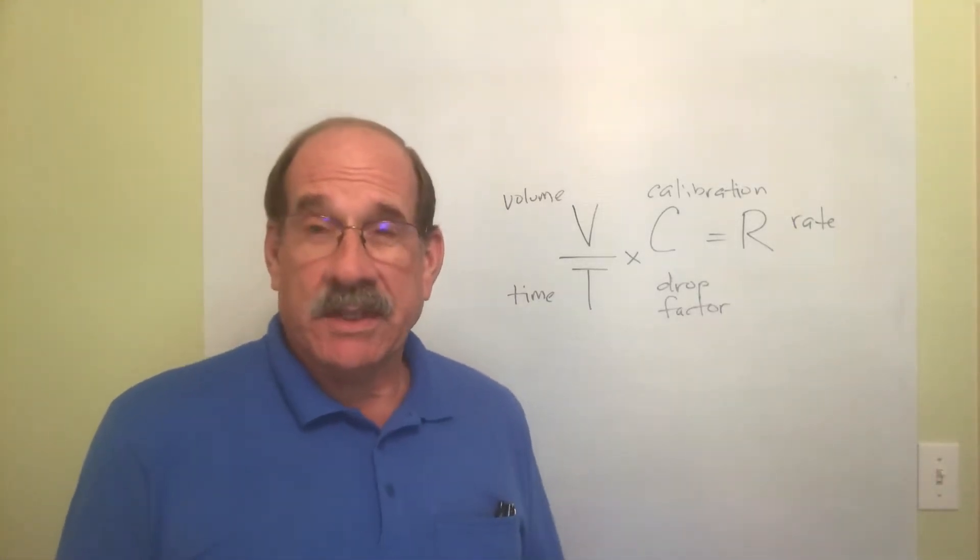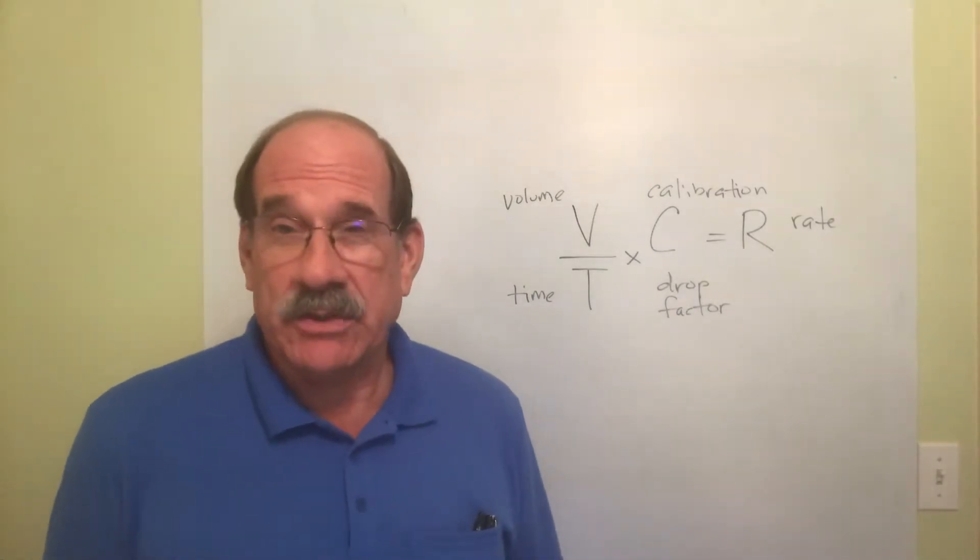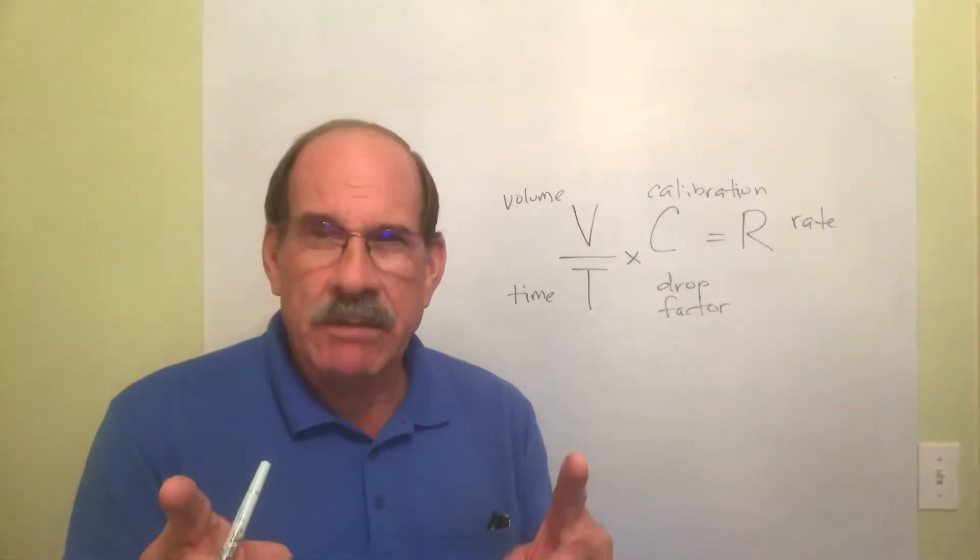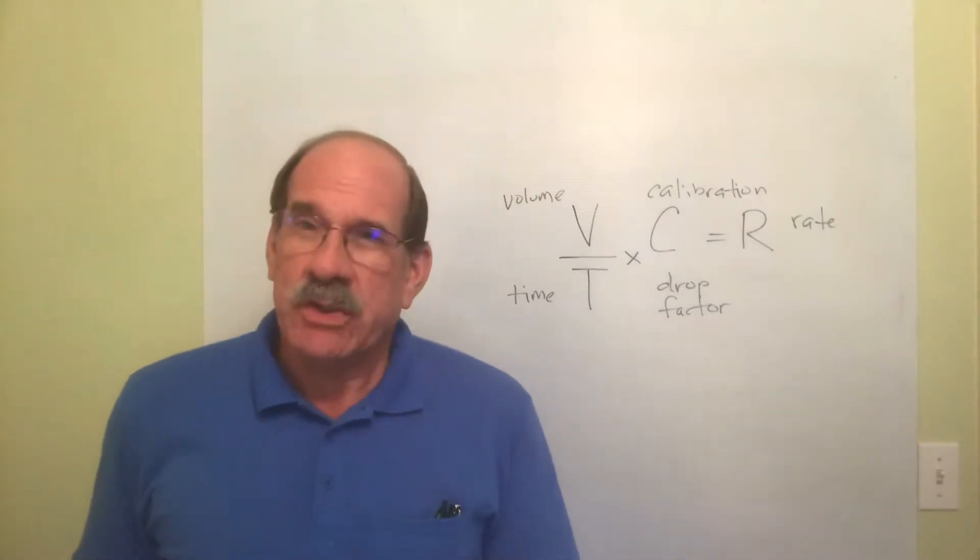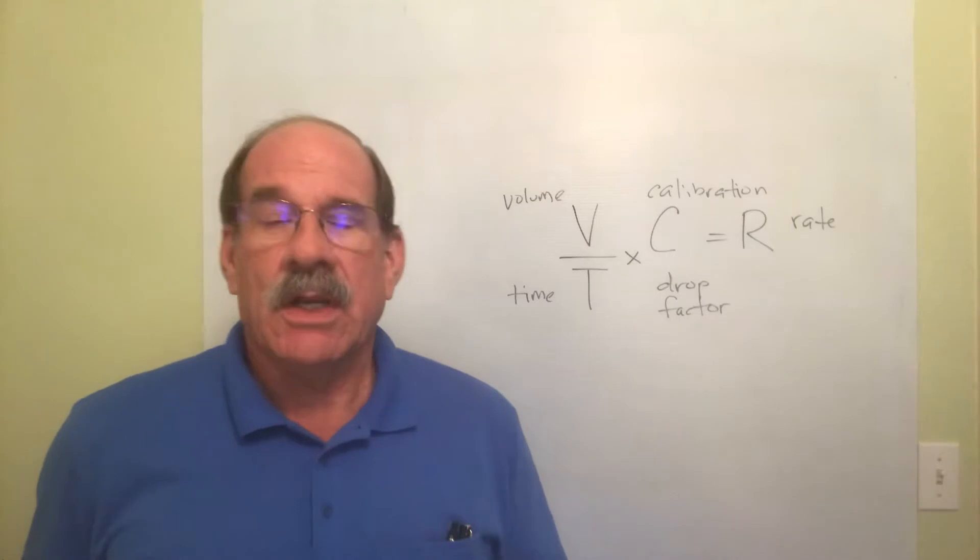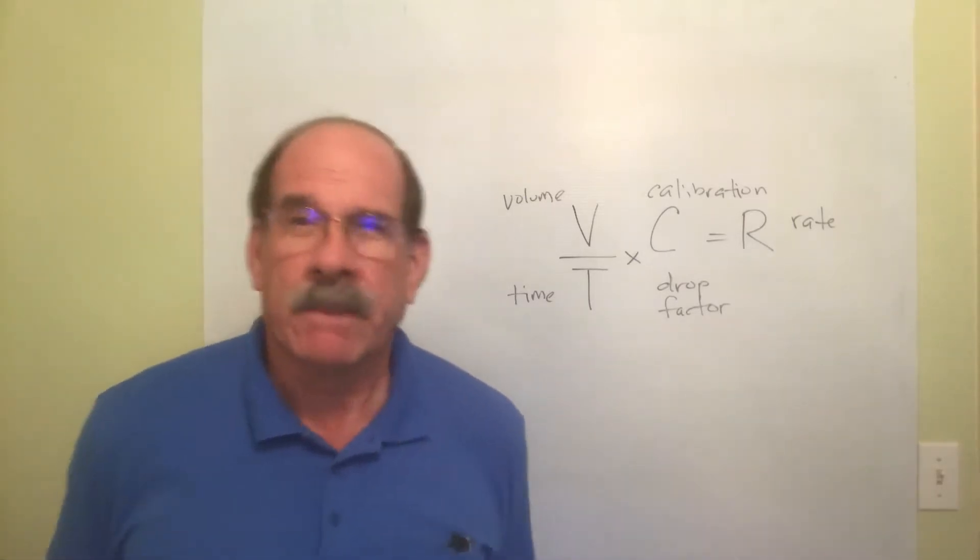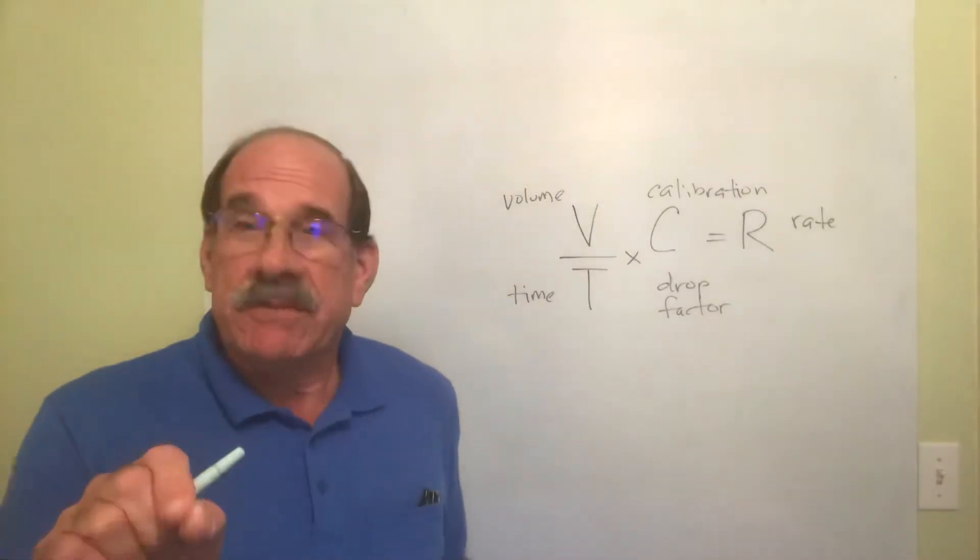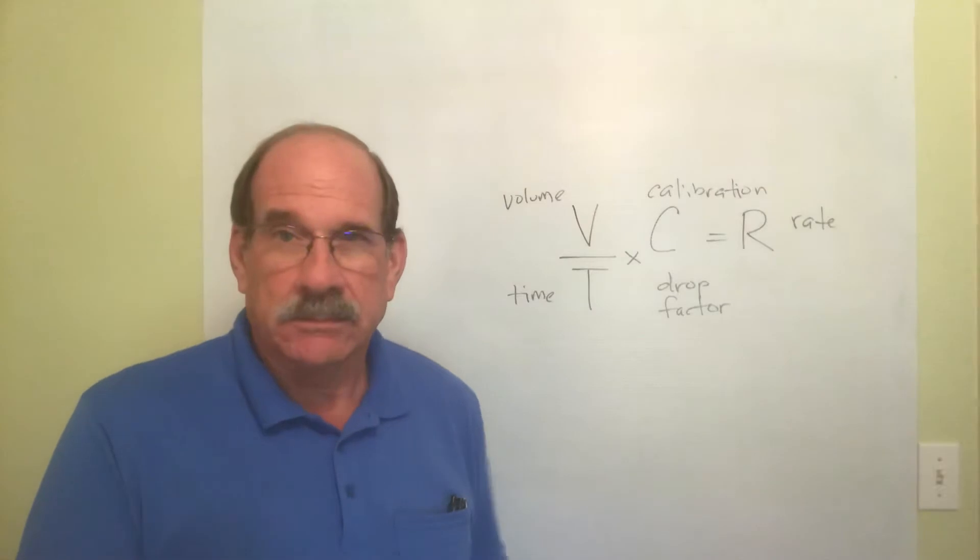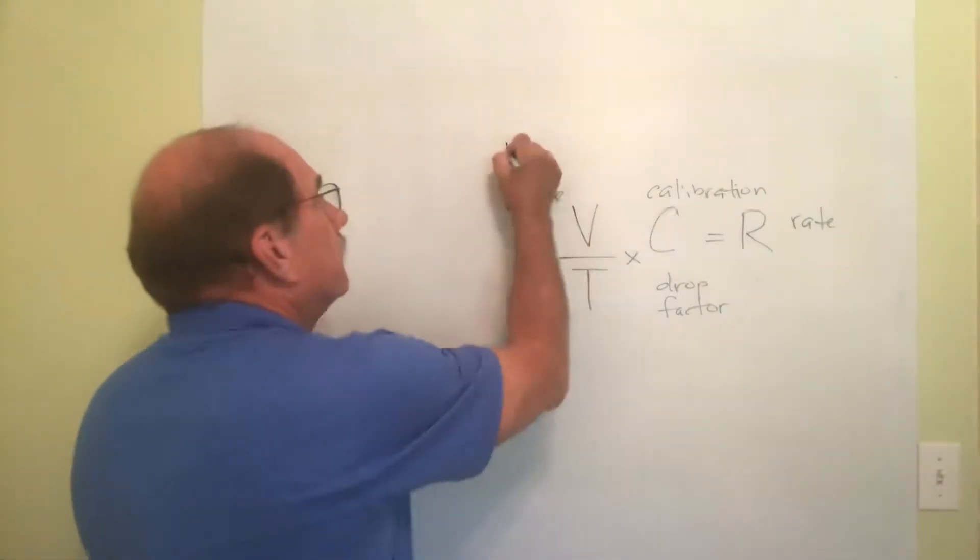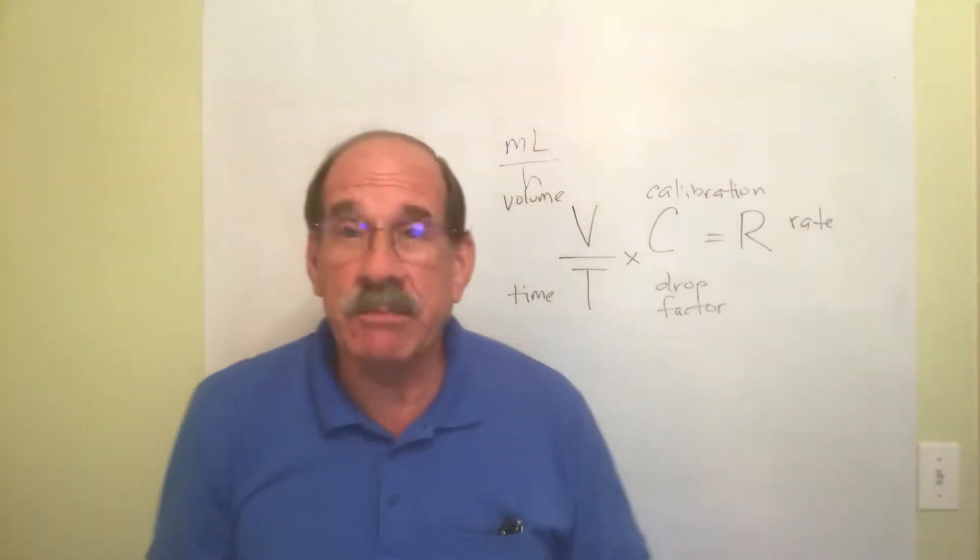You've already spent a lot of time going over this first set of IV types of calculations. Let me refresh your memory. When you have a machine - an infusion pump, infusion controller, syringe pump, or whatever you call this thing - you have to find the number of milliliters per hour.